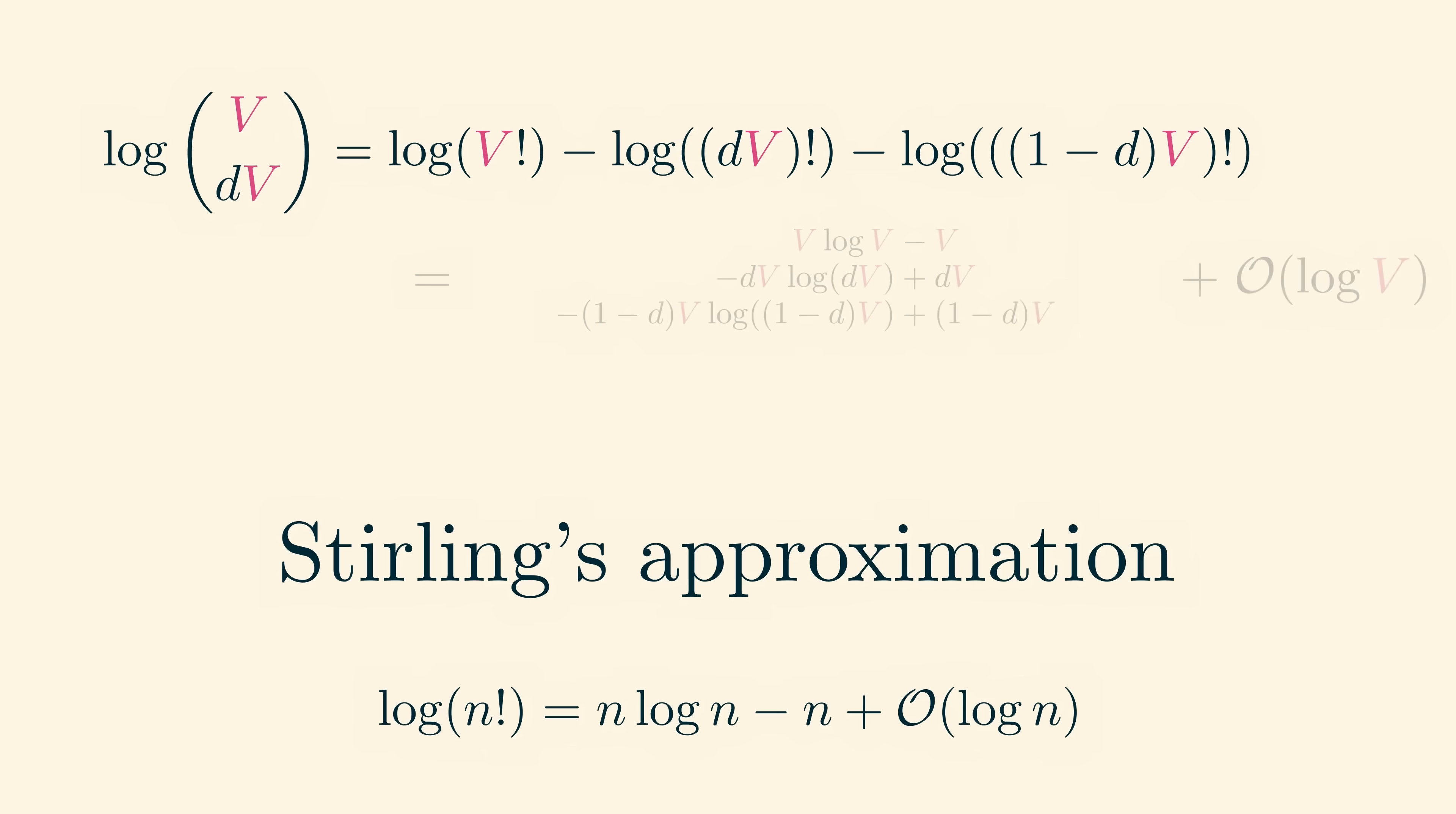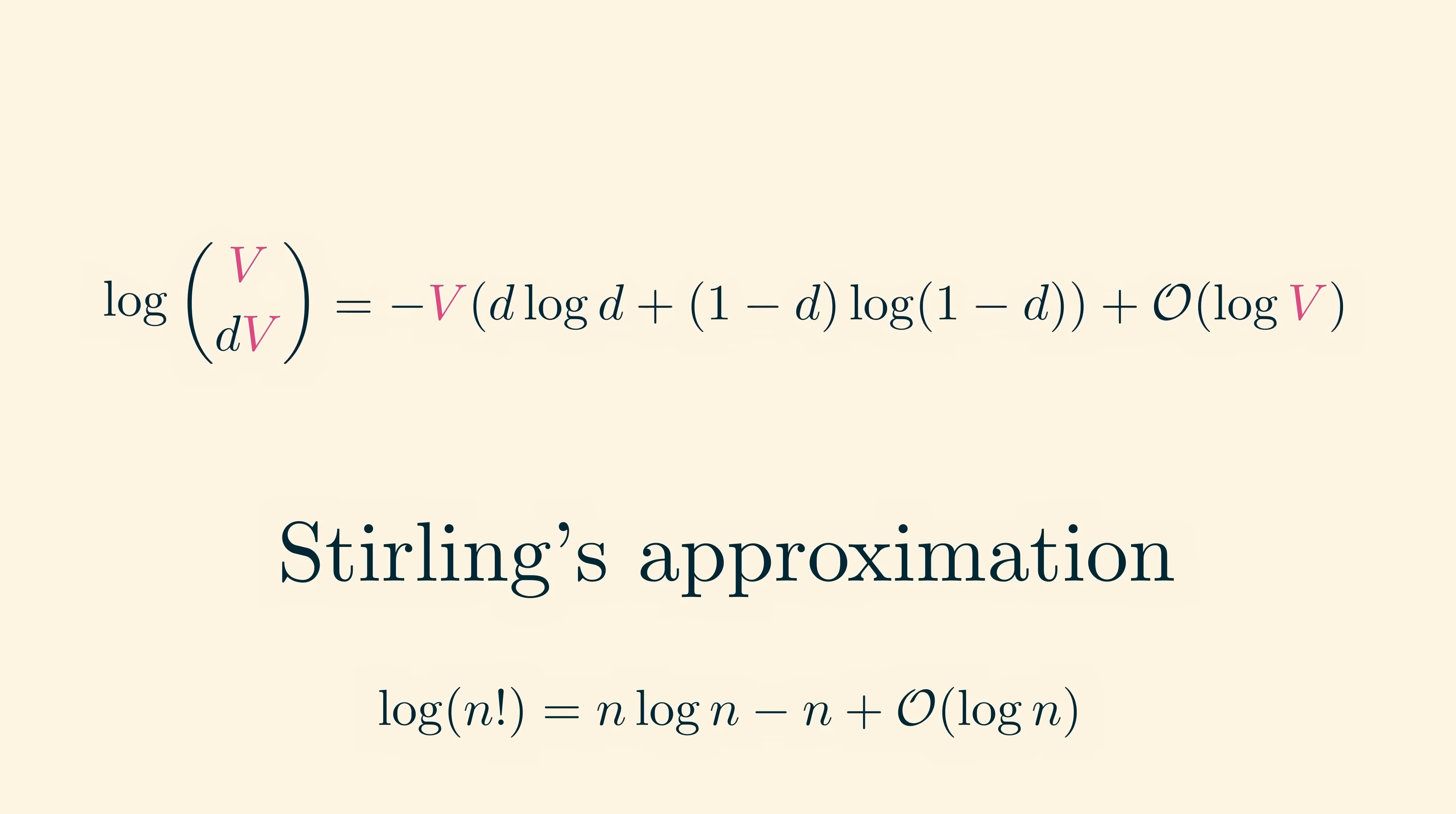Plugging this in for n equals v, dv, and 1 minus dv, we can do a bit of algebra to obtain minus v times d log d plus 1 minus d log 1 minus d. Exactly what we want. Plus an error term which is logarithmic in v.